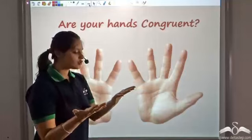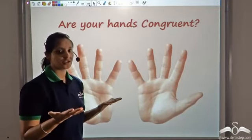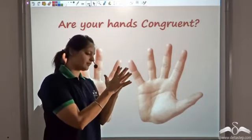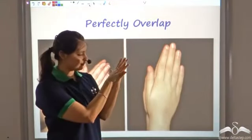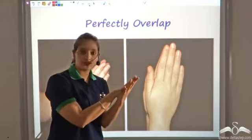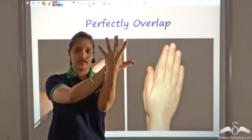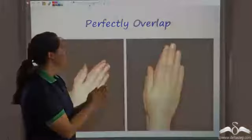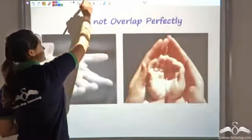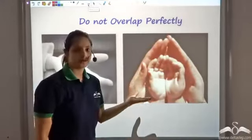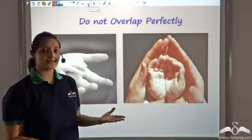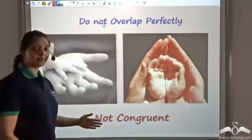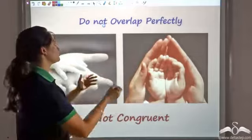Are your hands congruent? To check, an easy way is to put one over the other. If these two perfectly overlap, then they are congruent because the shape and size would be the same. My hands perfectly overlap, and so would yours — hence they are congruent. Now if you try this with your parents', friends', or neighbours' hands, you would see a slight or considerable difference in size, and hence they would not be congruent.